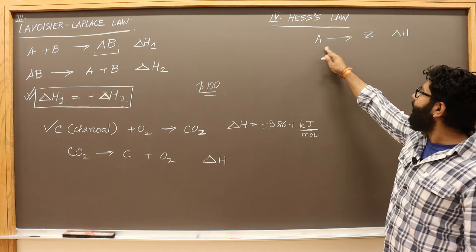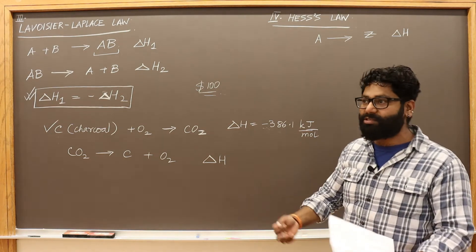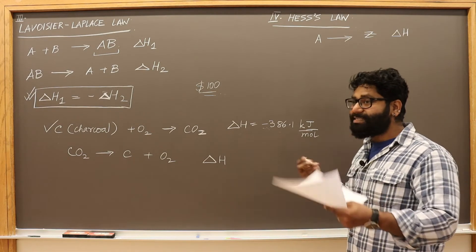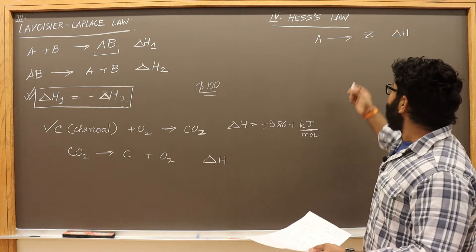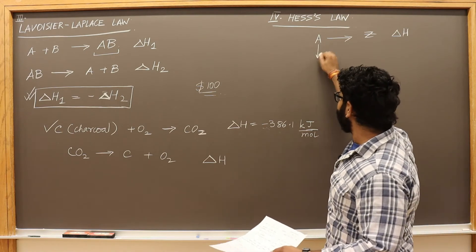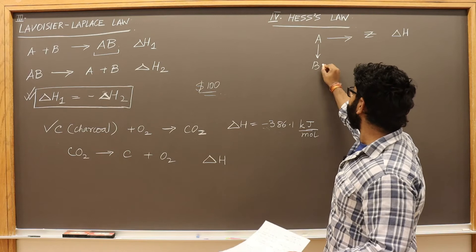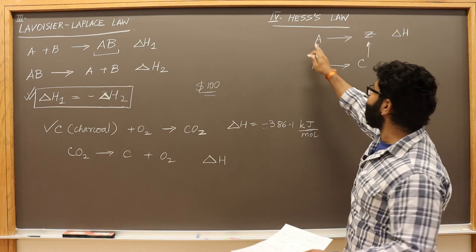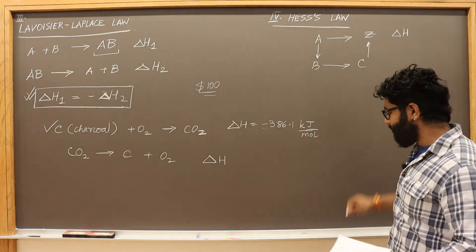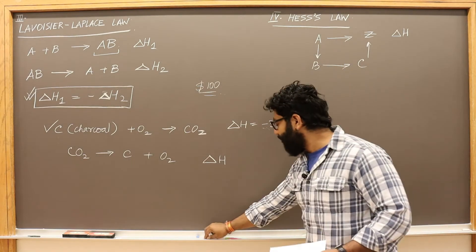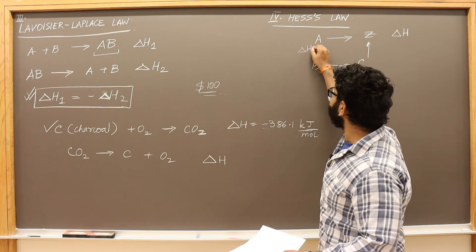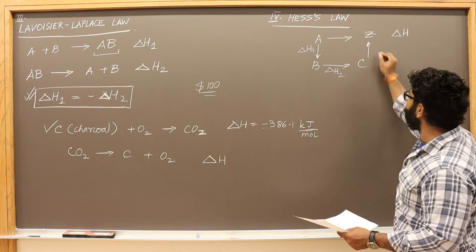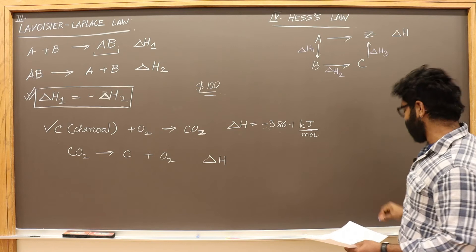Now, what if this reaction is not possible to monitor, not possible to do experimentally? What will you do? Now, you have an easy way of doing this. Let's suppose you can experimentally determine a series of reactions that can take from A to Z, but in multiple steps. So you first found out the delta H of this reaction, and then you found out the delta H of this reaction, and then you found out the delta H of this reaction.